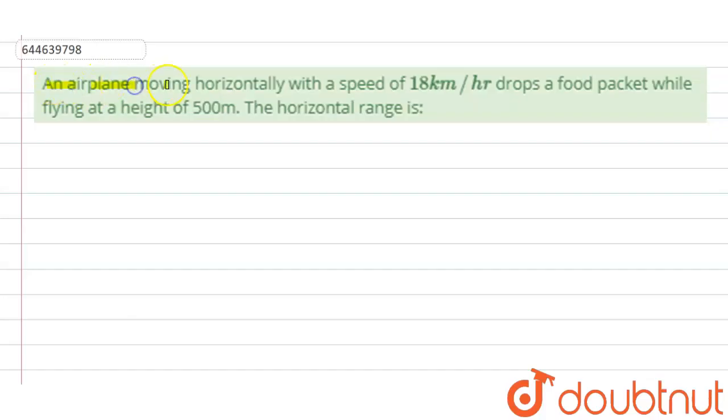An airplane moving horizontally with a speed of 18 kilometer per hour drops a food packet while flying at a height of 500 meters. The horizontal range is... So this question is based on the chapter projectile. In this question we